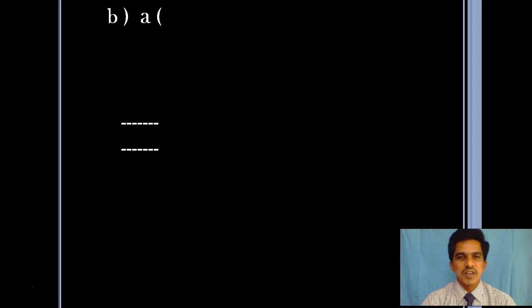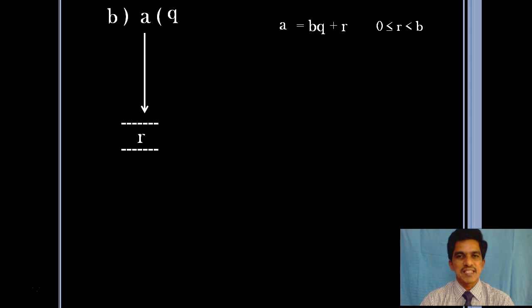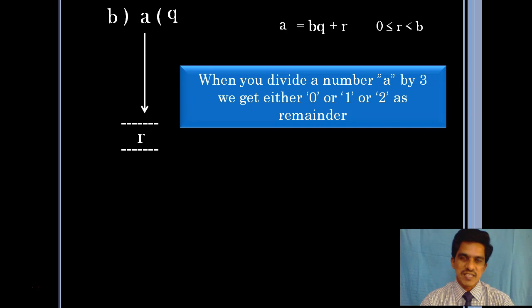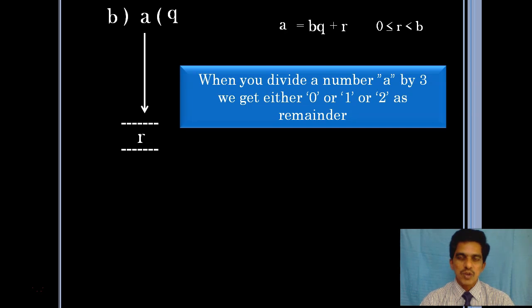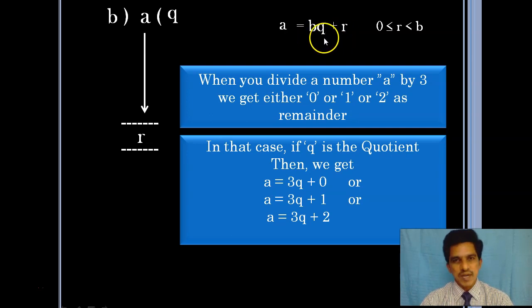When you divide a number a by b, at the end of the division you will have two values: quotient and remainder. According to Euclid's division lemma, a is equal to bq plus r, and 0 is less than or equal to r and less than b. For example, if the divisor is 3, the remainder can be 0 or any positive number but should be less than 3. So the remainder can be 0, 1, or 2.